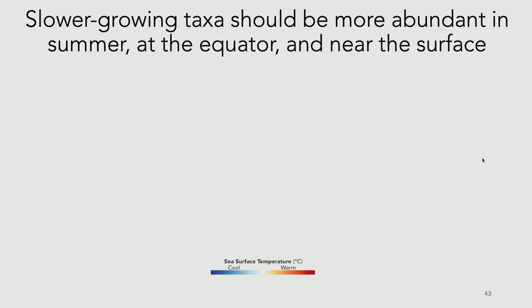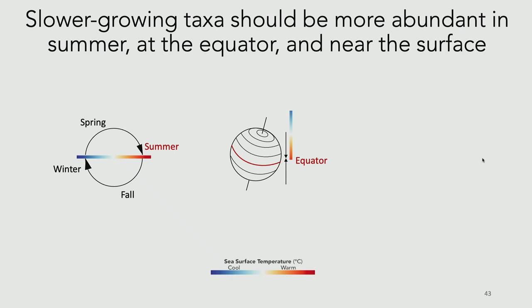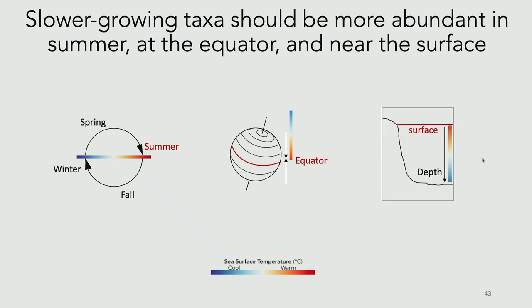The prediction is that slower-growing bacteria are more abundant when temperature increases. In the ocean, we can test this because temperature changes predictably along several axes: it changes during the course of the year, it changes with latitude, and it changes going from the surface to depth. So we should see slower-growing bacteria being more abundant in summer, at the equator, and at the surface of the ocean — a clear, testable hypothesis.